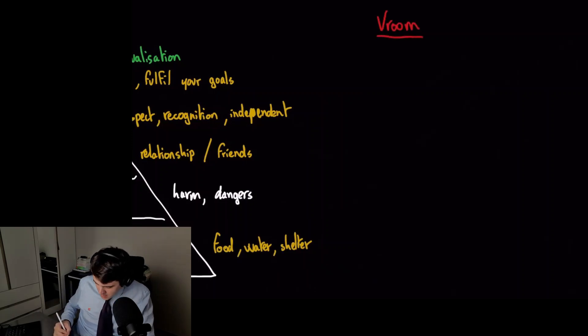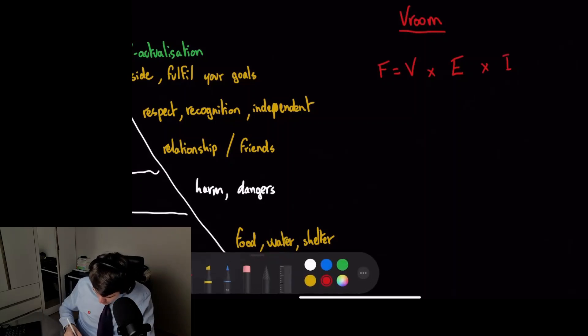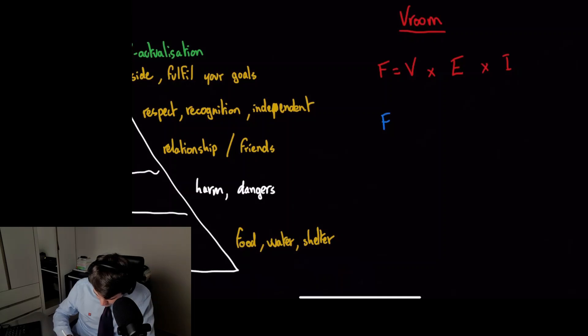And it looks like this: F equals V times E times I. So what is each one? F is the force or strength of motivation.